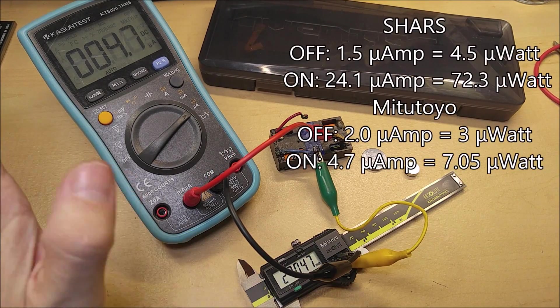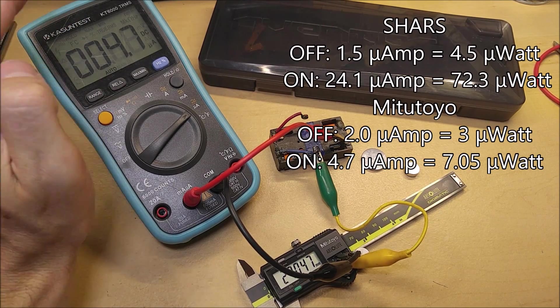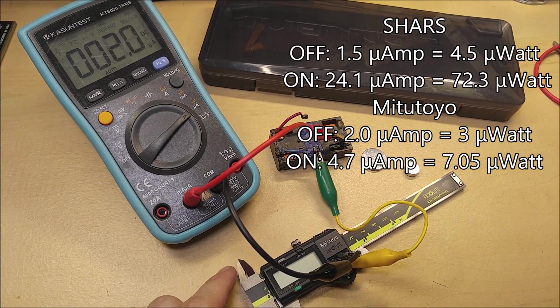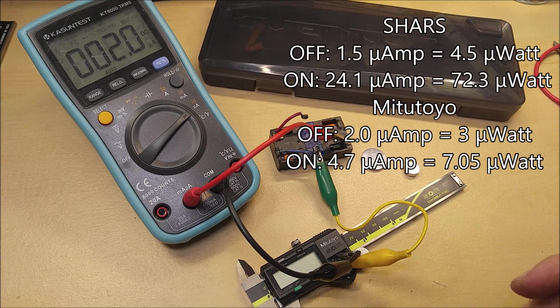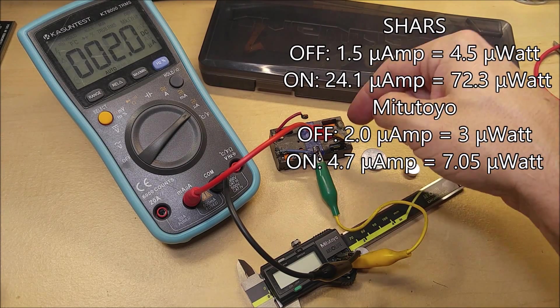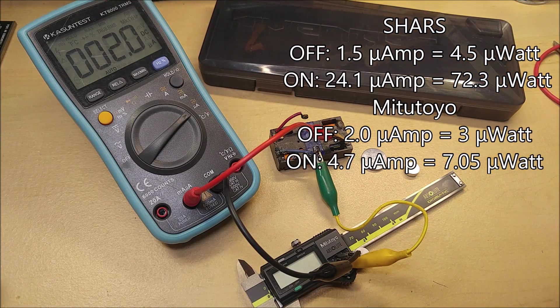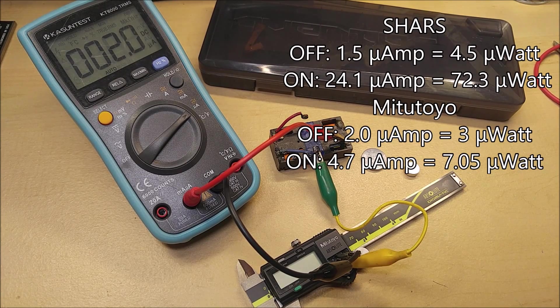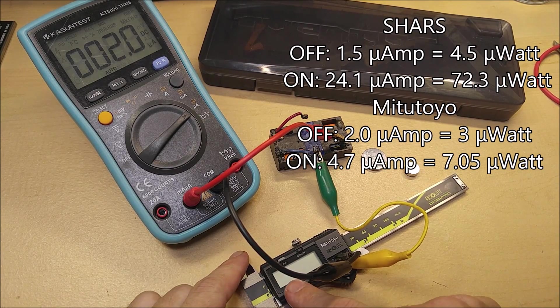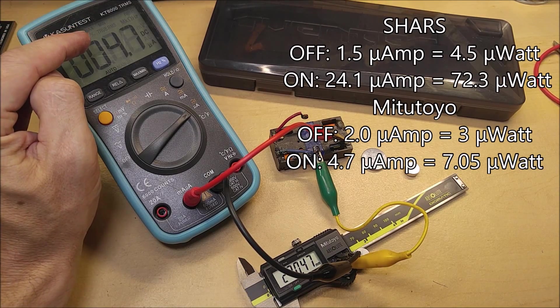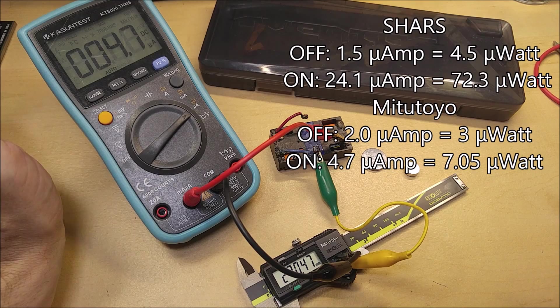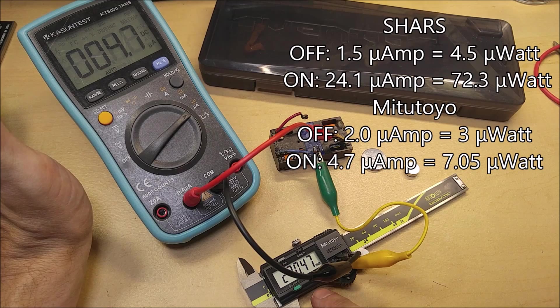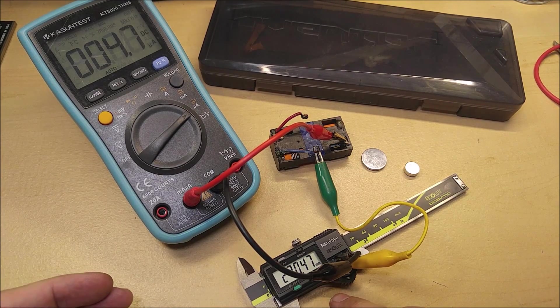Now let's compare that to the Mitutoyo. All right, so the Mitutoyo on is only drawing 4.7 microamps compared to the 24 that the Edventor was showing. And then off we are seeing 2 microamps. So the off power is pretty comparable. If we multiply 1.5 volts times the two, we're only getting about 3 micro watts compared to the Edventor, which was about 4.5 micro watts. And then in the on state, we're actually only getting 4.7 micro watts times the 1.5 volts, which is only about 7 micro watts when active.